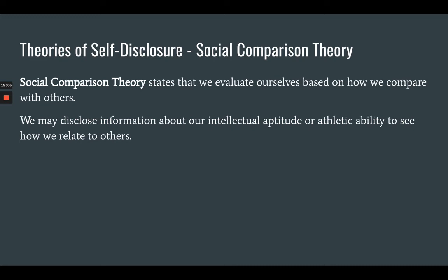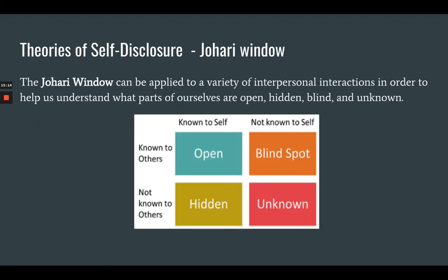Social comparison theory states that we evaluate ourselves based on how we compare with others — we may disclose information about our intellectual aptitude or athletic ability to see how we relate to other people. The Johari Window defines self-disclosure in this way: there's our open self — information known to self and known to others, things that can be seen by people around us without us even telling them. The hidden self is known to us but not known to others. The blind spot is not known to us but is known to others — there are always things about us that others notice that we don't, like nervous habits or tics. And then there's the unknown self — that's our future self, things that nobody knows.